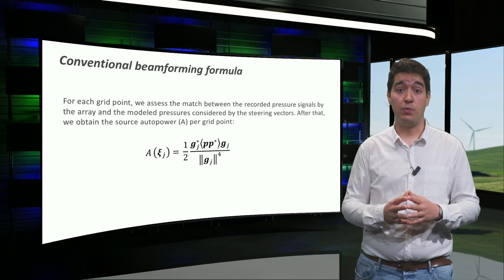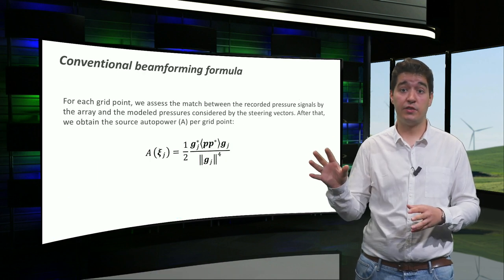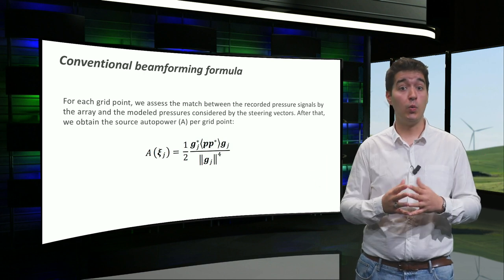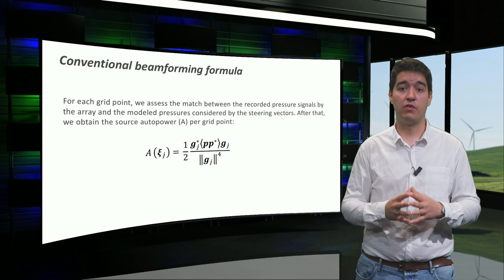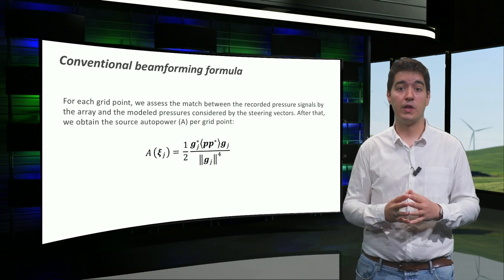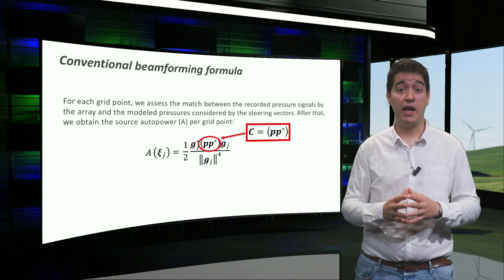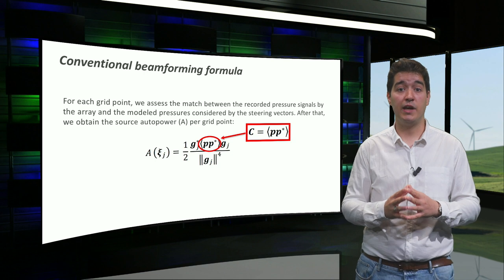Finally, we assess the match between the model pressures by the steering vectors and the actual recorded signals by the microphones. We do so by using the conventional beamforming formula, which gives us the source auto-power for each grid point. As you can see here, this is the cross-spectral matrix, and everything else depends on the propagation model we chose.